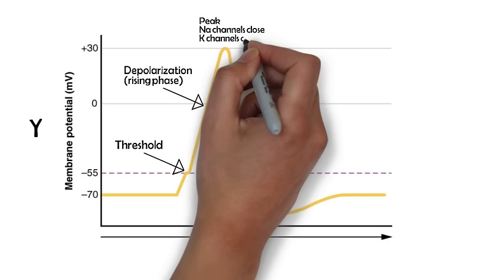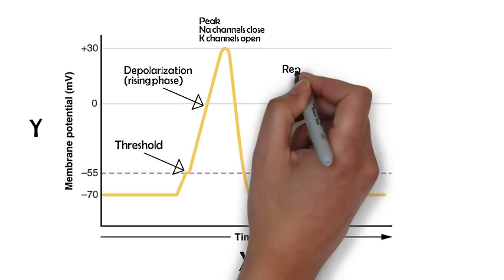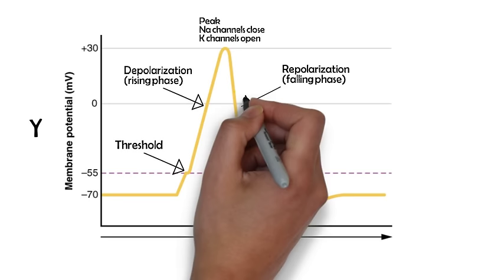Eventually the action potential reaches its peak. Sodium channels close and potassium channels open, which allows potassium to flow out of the cell. This loss of positive potassium ions promotes repolarization, which is known as the falling phase of the action potential.